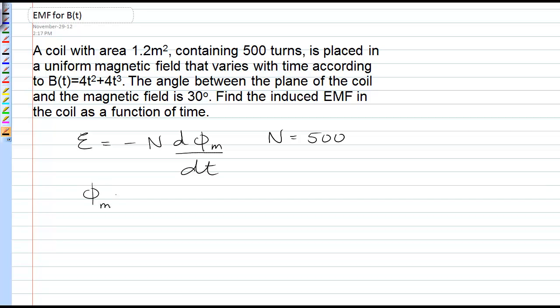The expression for flux is the integral of B dot dA. Now, the only time you have to integrate that is when B is non-uniform in space, and in this case it's a uniform magnetic field that varies in time, not in space. So we don't have to integrate.